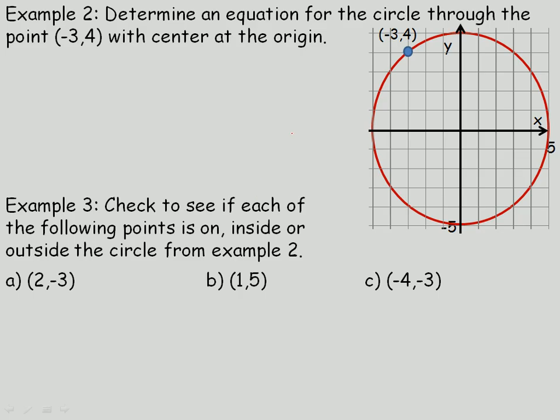On the second page, in example 2, we have a circle here that goes to the point (-3, 4), and we're asked to determine an equation for this circle. So remember the general form of an equation for a circle with the center of the origin and radius r is x² + y² = r². And really all we have to do is find what r is.